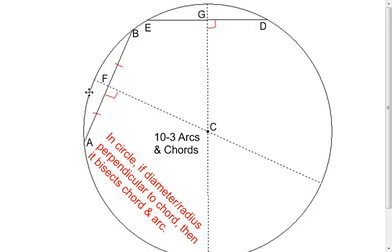It's also going to bisect the arc up here. So that would tell me that arc FB is going to be congruent to arc FA.